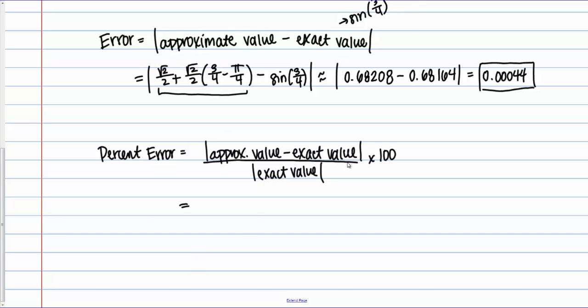So previously we found that the expression in the numerator here. This absolute value of the approximate minus the exact. To be approximately this decimal 0.00044. Then we need to divide that by the absolute value of the exact quantity. Which we found to be 0.68164. And then we're going to multiply that by 100. So if you work that out, it's going to give you approximately 0.065%. And once again, I've done a good bit of rounding to get to this value here.